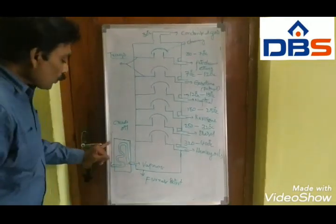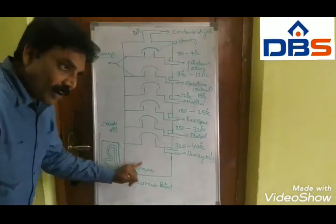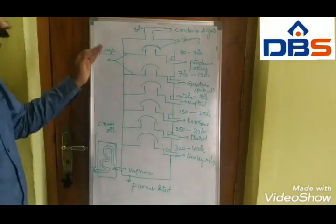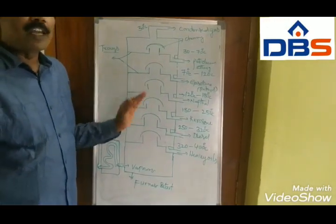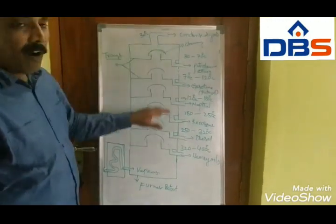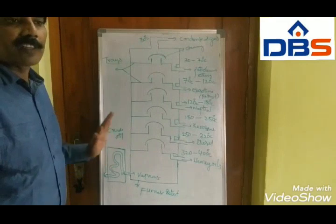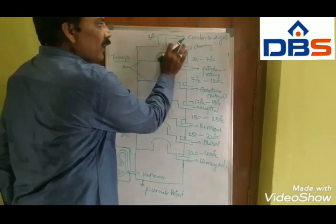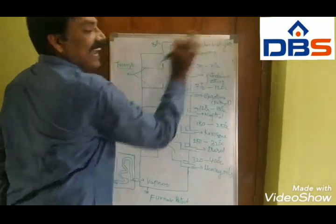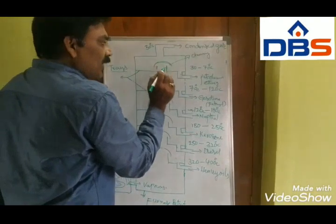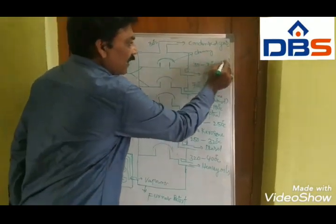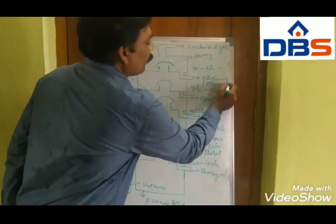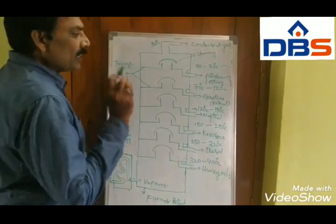That crude oil is passed through the tall retort and distilled at 400 degrees centigrade. At different boiling points, different oils are released. At below 30 degrees centigrade, condensed gas is released. From 30 to 70 degrees centigrade, petroleum ether is released.